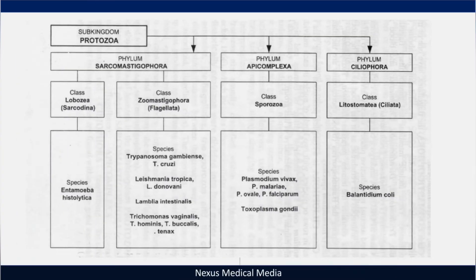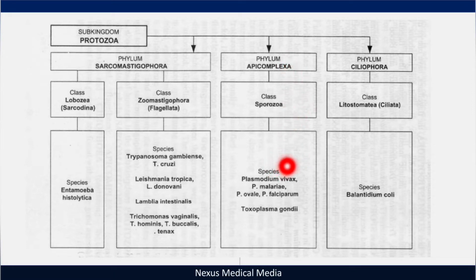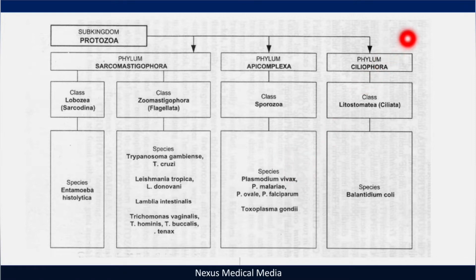Let's talk about Toxoplasma gondii. This belongs to phylum Apicomplexa and class Sporozoa. In this class you also find Plasmodium species like Plasmodium ovale, vivax, falciparum — the malaria parasites. You can click the link on the top right corner and watch our Plasmodium video.